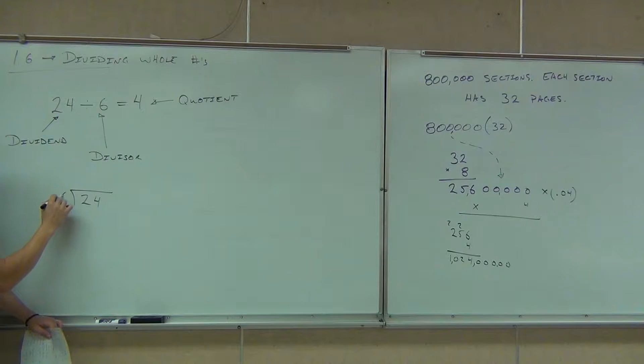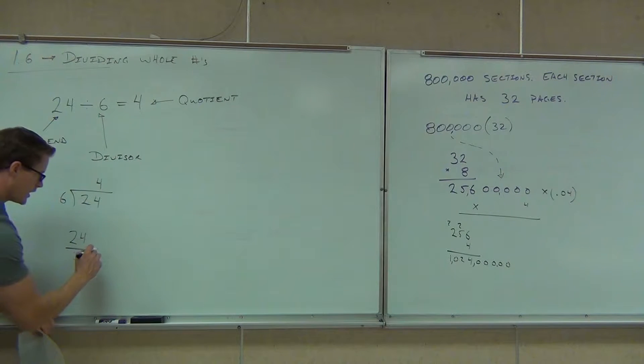The divisor here is going to go on outside, and our quotient would go on the top. One last one that we can have. We can write this as a fraction. 24 over 6 means 24 divided by 6. All three of these mean exactly the same thing. So when you see them, don't get intimidated just because there's a fraction here. All it means is take 24, divide it by 6, and get 4 out of it.